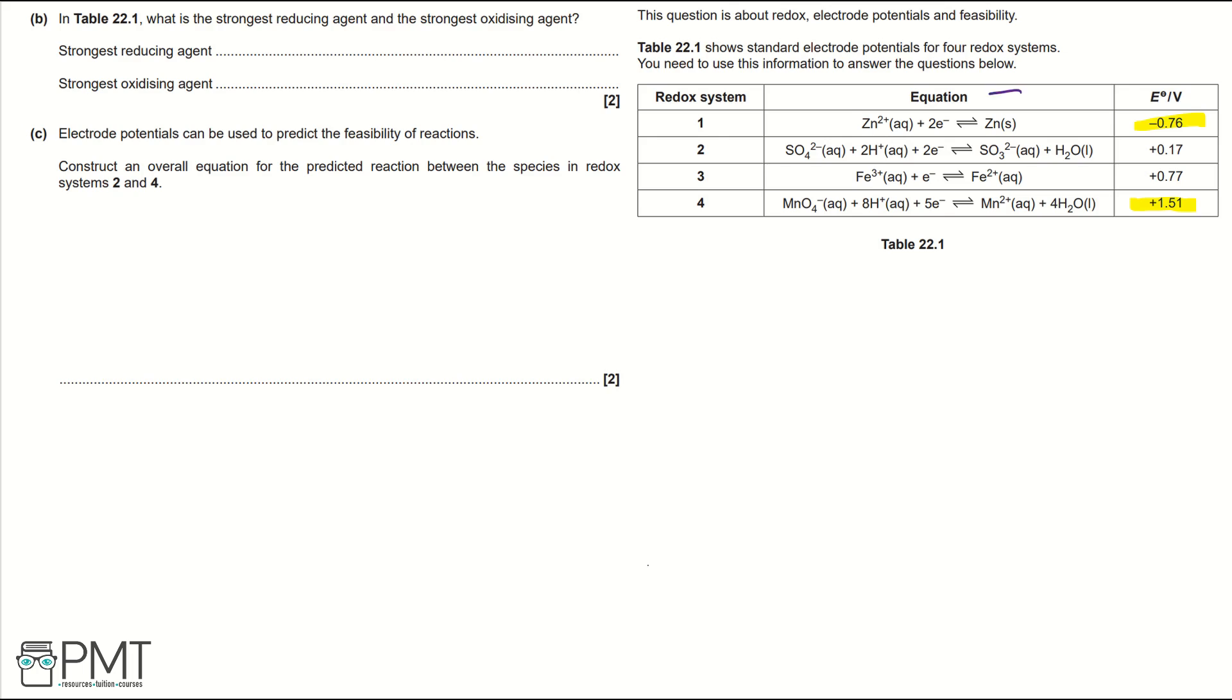So it's going to go backwards so then we're going to focus on zinc. Now the oxidation states of zinc change from 0 to 2+, therefore zinc is being oxidised and is a reducing agent because a reducing agent will help oxidisation.